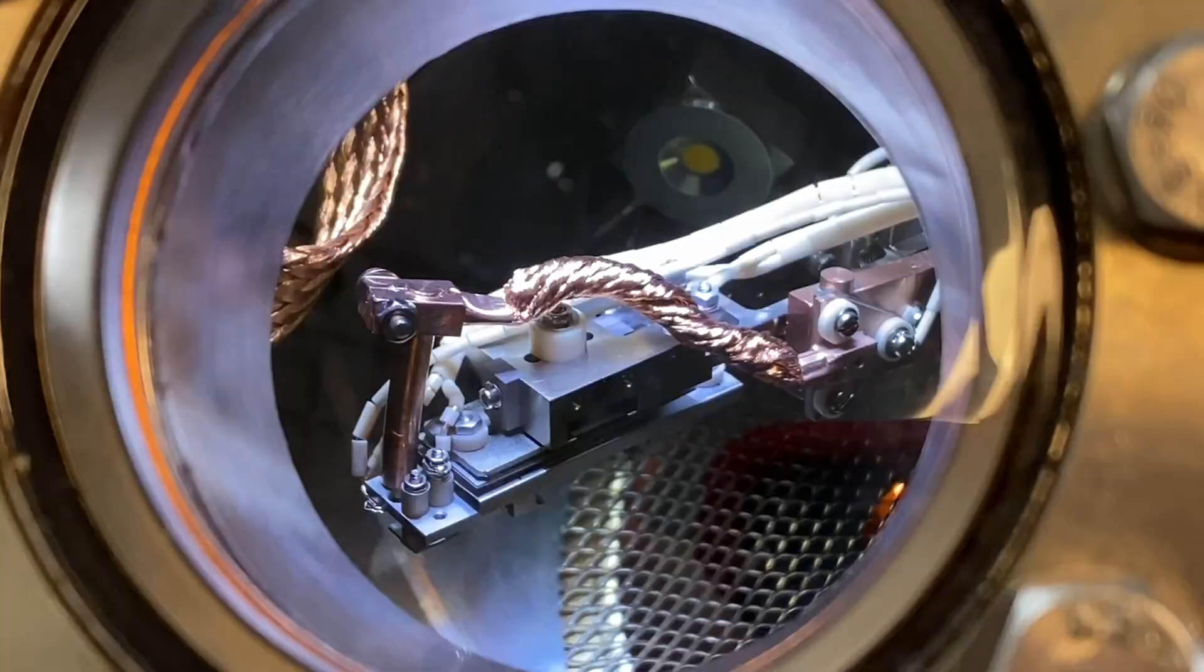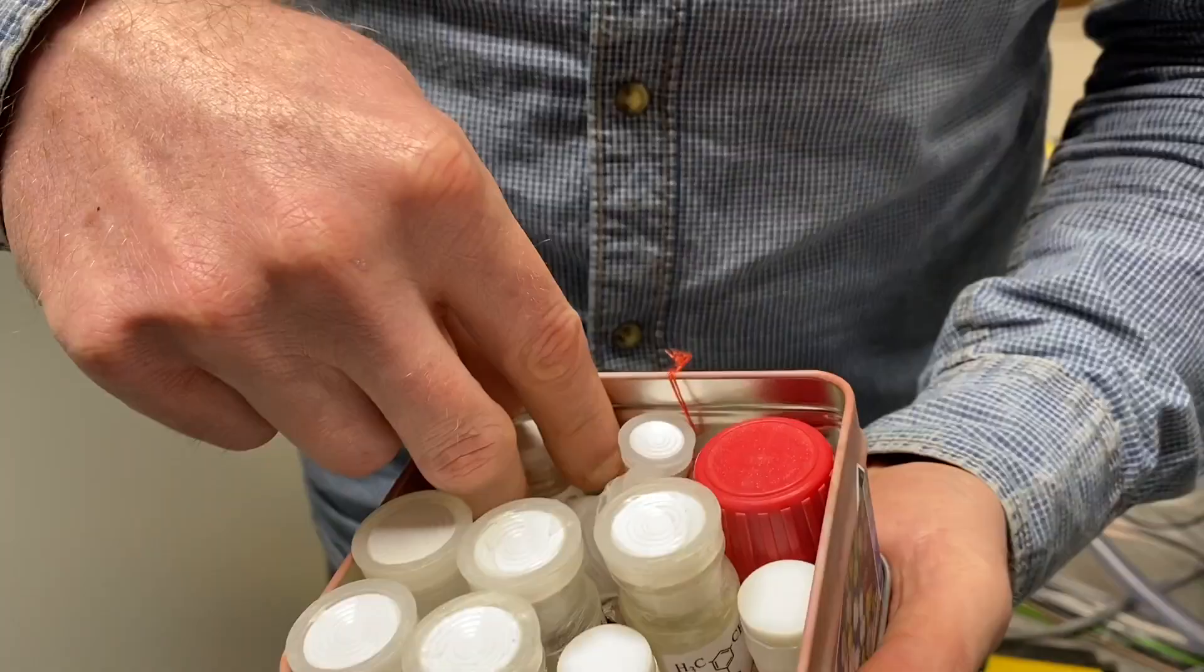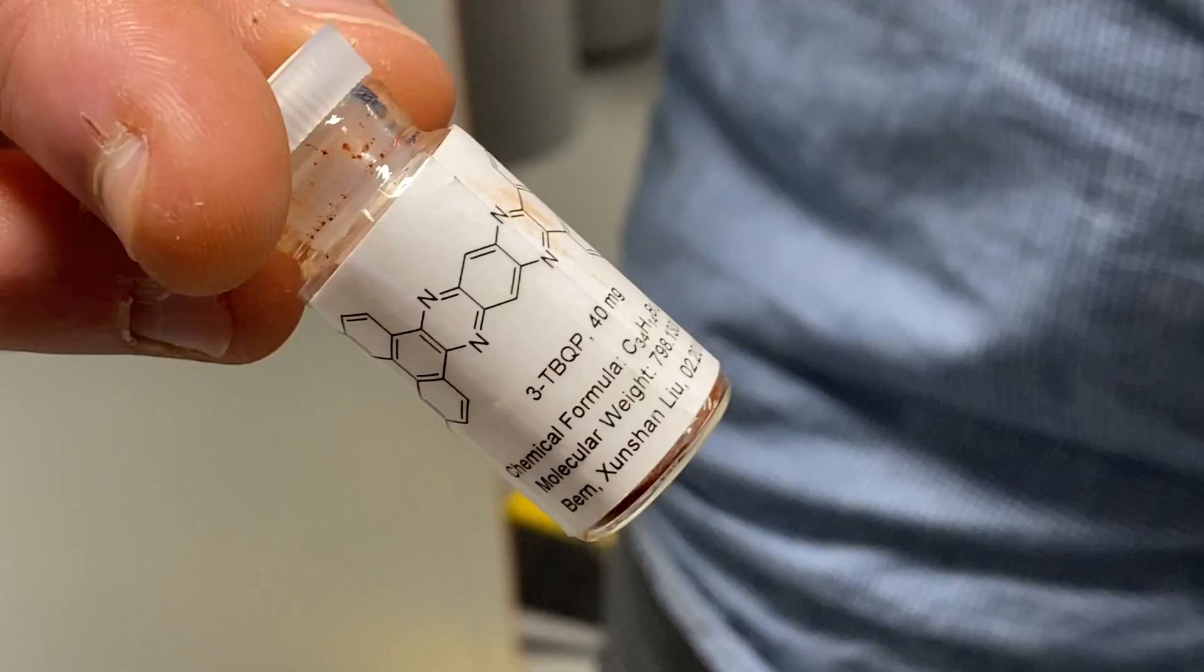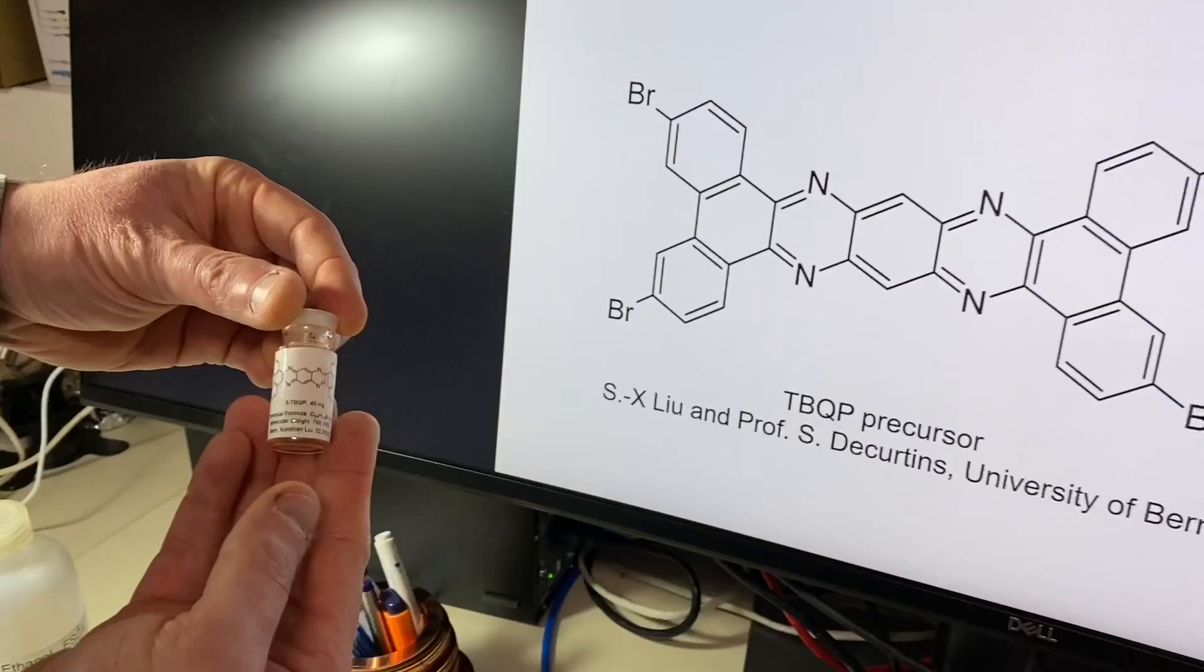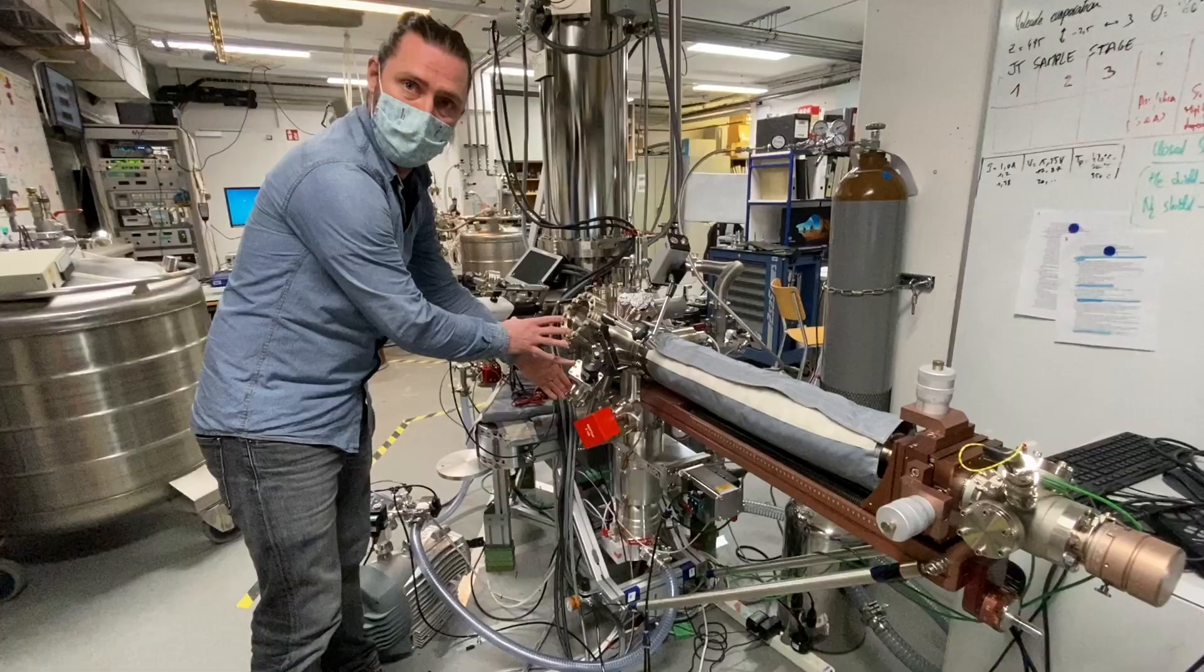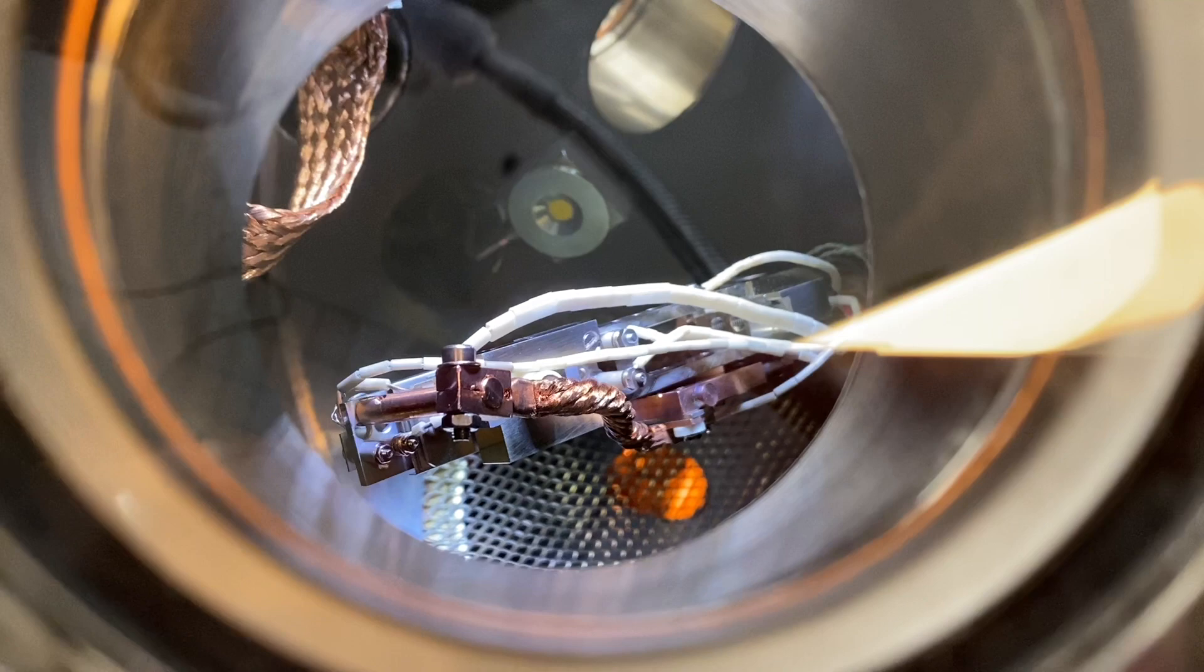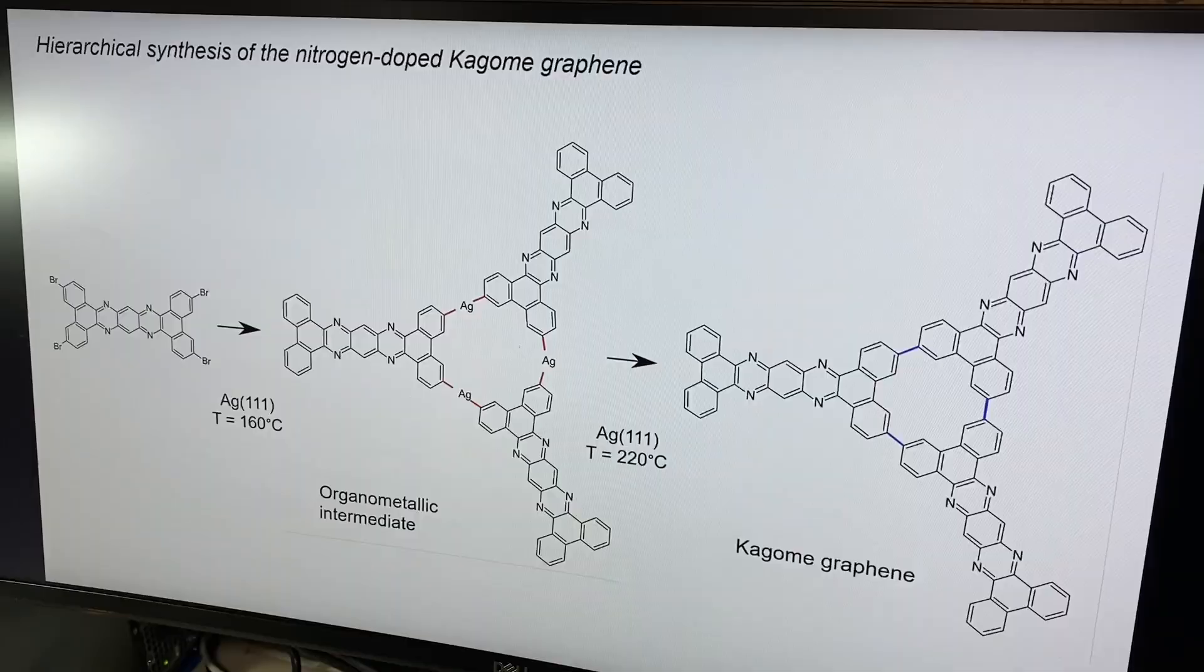Kagome graphene was produced by an on-surface reaction in ultra-high vacuum. Our colleague from the University of Bern synthesized the precursor. Then we use this precursor in our chamber in ultra-high vacuum. We evaporated the molecule on surfaces, annealed the surface and produced the Kagome graphene.